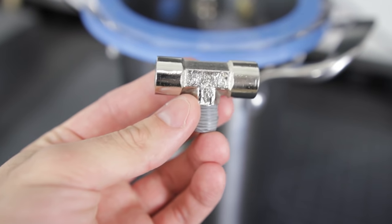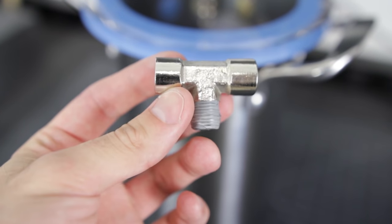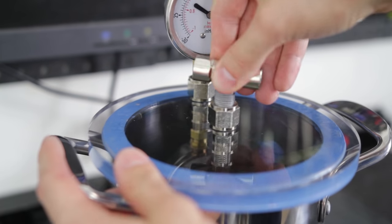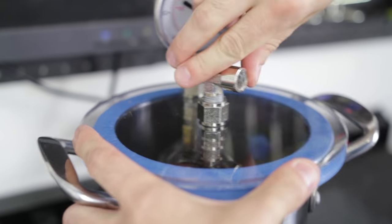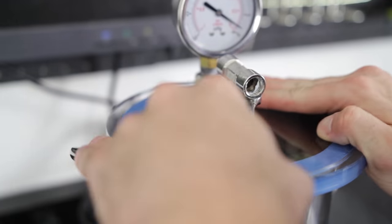I use the T-fitting to allow me to use two ¼-inch NPT ball valves. I pretty much add Teflon tape to any connection with the thread and tighten firmly.